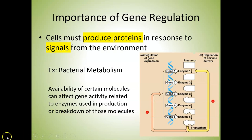Here's a picture of a bacterial metabolic pathway — the tryptophan synthesis pathway. Gene one produces enzyme one, gene two produces enzyme two, gene three produces enzyme three, and so forth. The enzymes carry out the pathway, and then tryptophan gets made and feeds back with a negative sign — it acts as an inhibitor. So depending on what's available in a cell, different genes will get turned on depending on what's available.